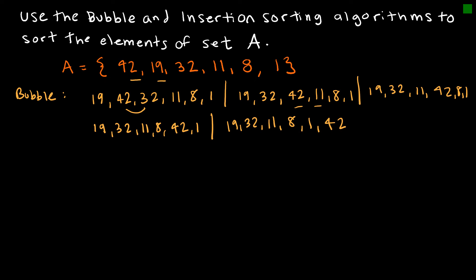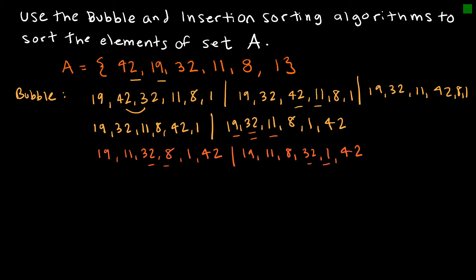In pass two, I compare 19 and 32 — those are in the right order. Continuing through the pass, 32 moves to its correct spot, giving 19, 11, 8, 1, 32, 42. Notice that on pass one, 42 landed in the right spot, and now after pass two, 32 is also in the right spot. I then start with 19 and 11.